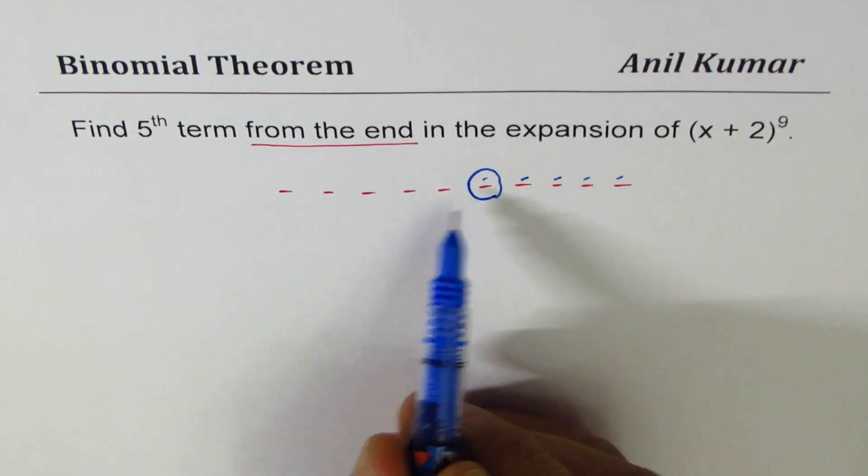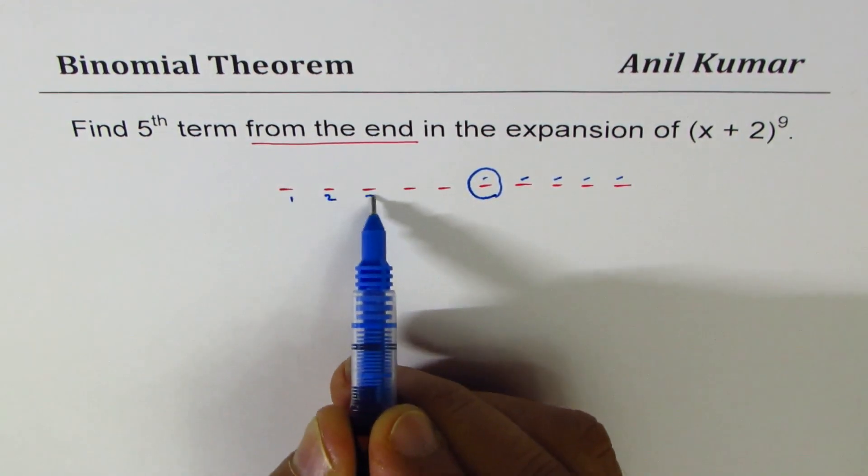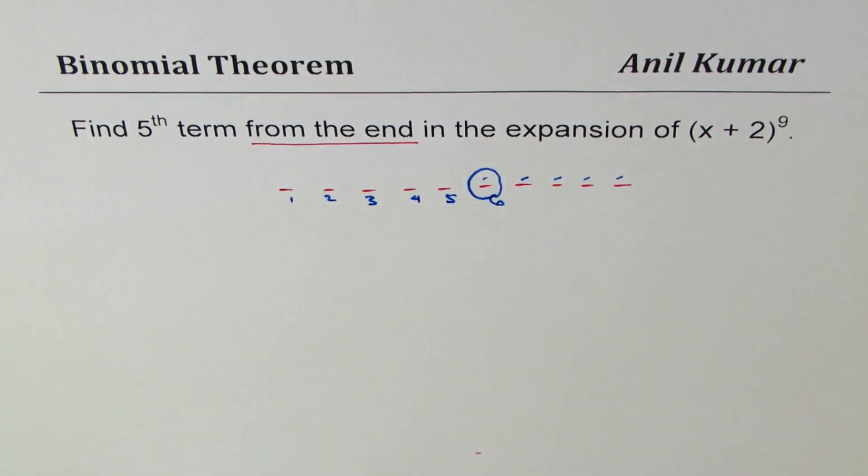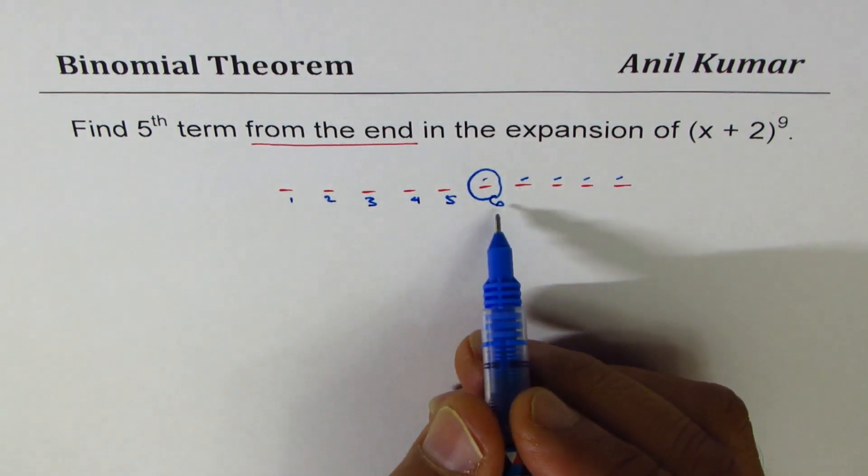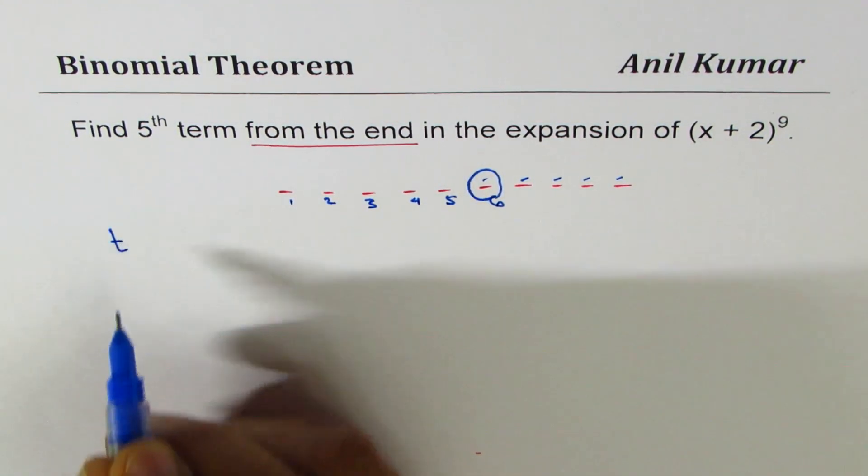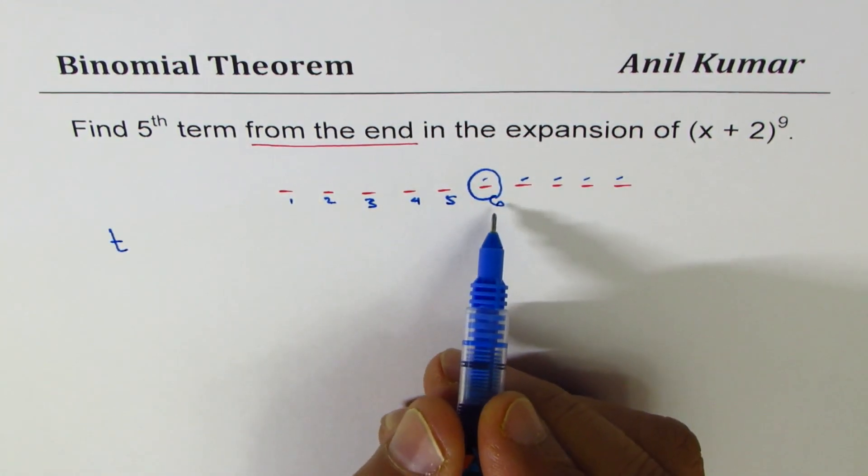Now you need to locate its position from the beginning. It is going to be 1, 2, 3, 4, 5, 6. Do you see that? Why do we need to locate from the beginning? Because the general formula is t_(r+1).